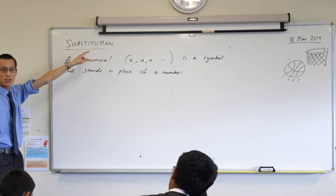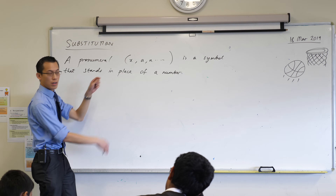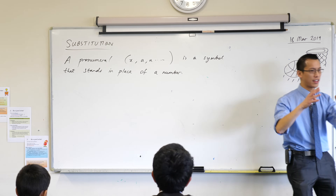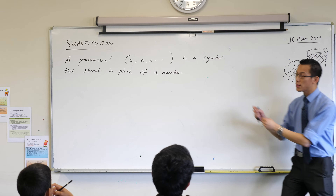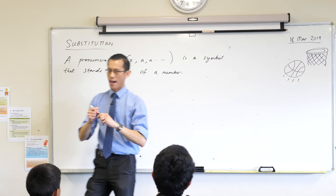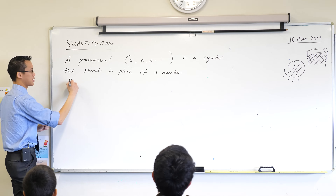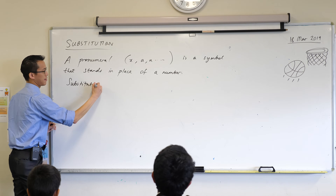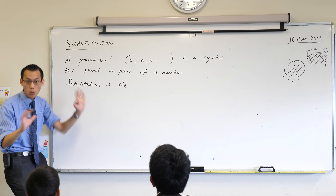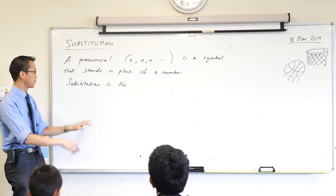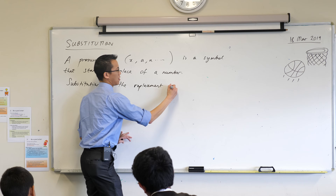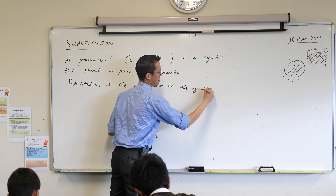Now substitution is what it's called when we take that pronumeral and we swap it for a number. It might be like an answer, or it might be the length of a particular shape. If we put the number back in where the pronumeral was, that's what we mean by substitution. Let me state that more simply: substitution is the replacement of that symbol with a number. That's all it means — big fancy word, very simple idea.